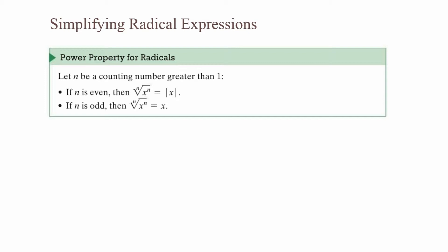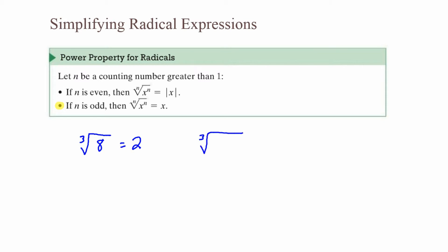Power property for radicals: let n be a counting number greater than 1. If n is even, then the nth root of x to the nth power equals the absolute value of x. For example, the square root of 25 equals 5, even though negative 5 times negative 5 is also 25. If n is odd, then the nth root of x to the n power equals x. For example, the third root of 8 equals 2, and the third root of negative 8 equals negative 2.